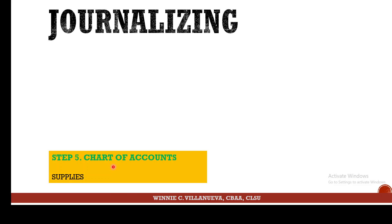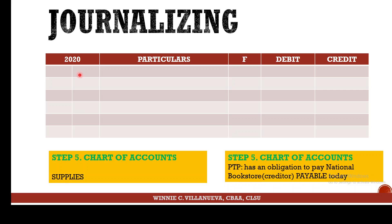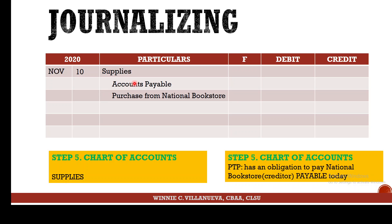The account name for what was received is Supplies. The promise to pay becomes Accounts Payable. Date: November 10. Value received is debited: Supplies. Value parted with is credited: Accounts Payable — the promise to pay. To whom? National Bookstore — because you purchased from them on account. How much? 12,000.